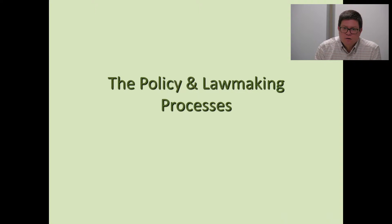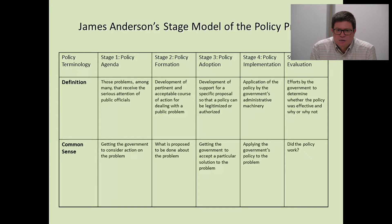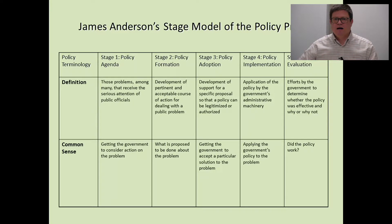So I've got here one of the most predominant models used in studying public policy — one that I use in my public policy classes. There's a scholar named James Anderson who has a very popular textbook, and he has what's called a stage model of the policy process. He sets up five stages that move sequentially, with a feedback loop that leads back to the front.